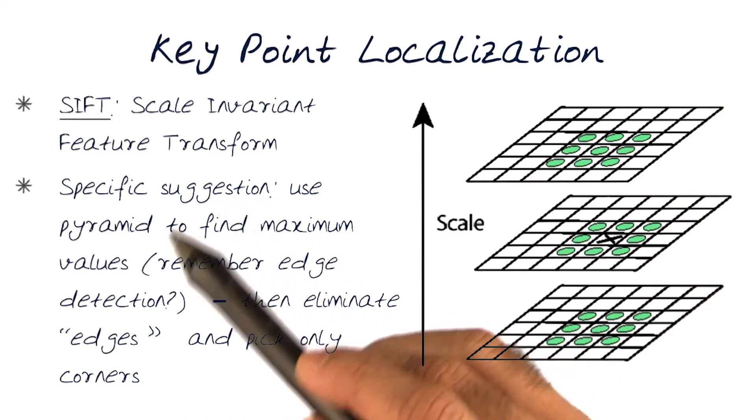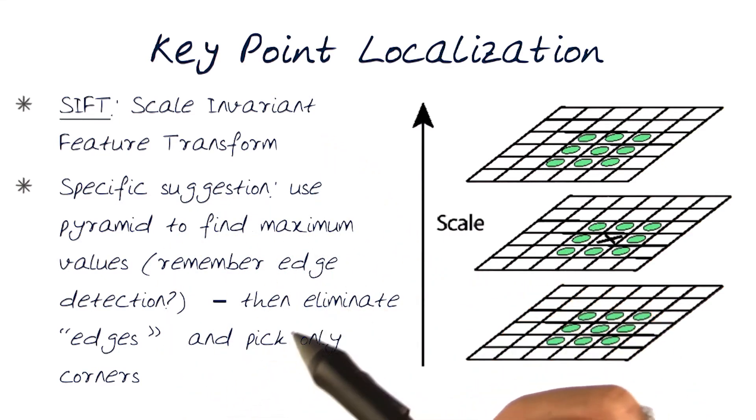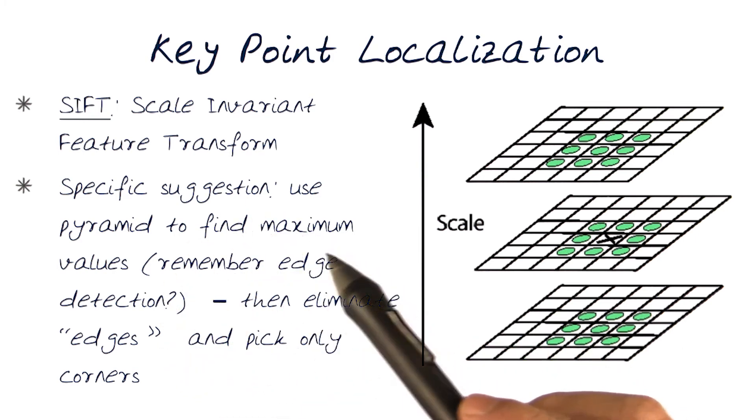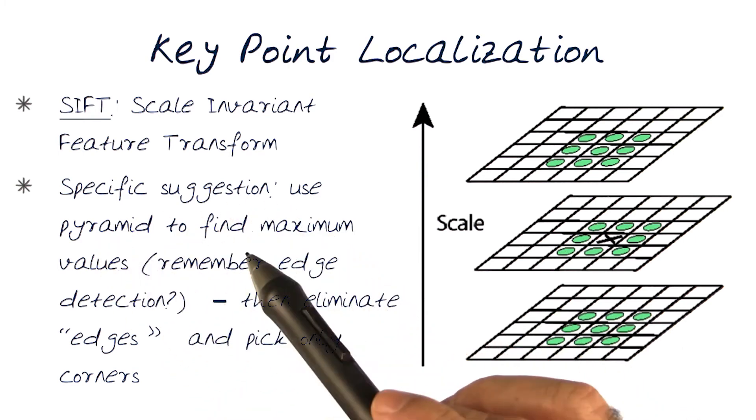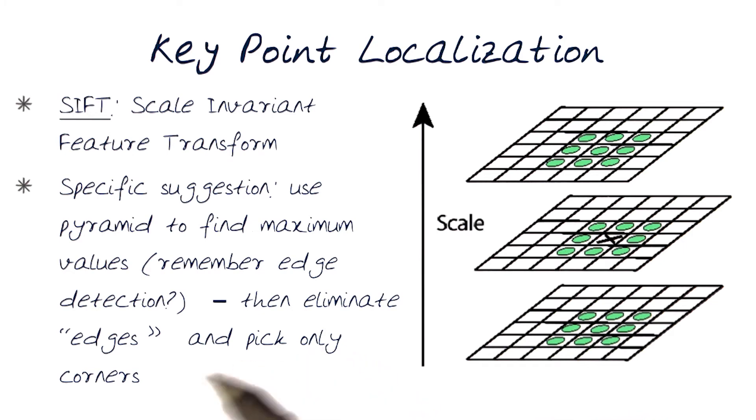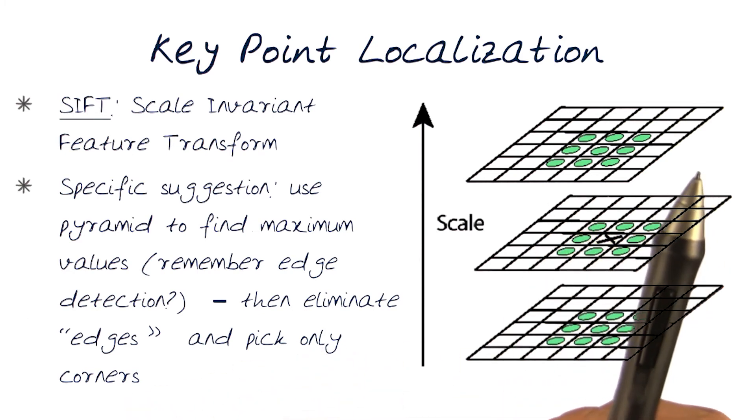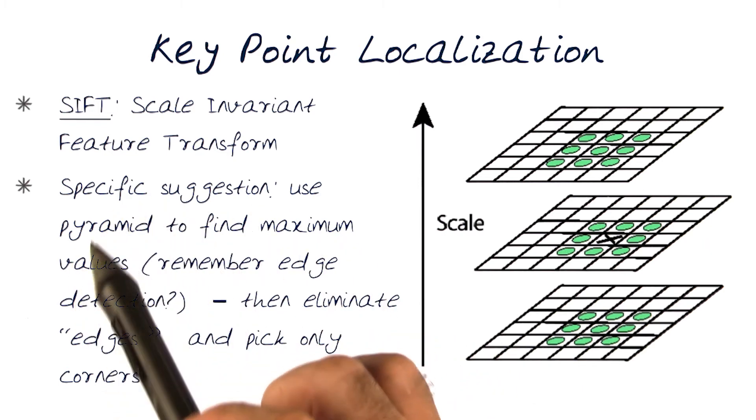So, run the same process that we've been doing before, except that now find all edges using different frequencies, and then eliminate the edges and pick only the corners. So, again, the same concept that we've been doing for corner detection, but except we do it at multiple scales.